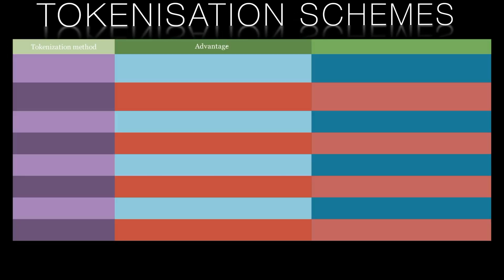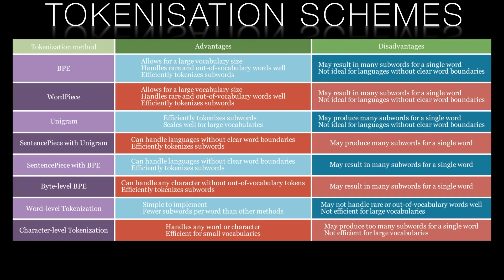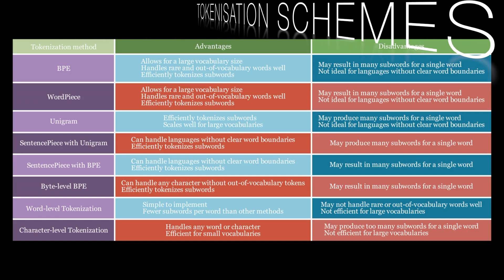With both word and subword tokenizers, there are multiple different approaches. Several of the popular methods are shown on your screen, each with its own strengths and weaknesses. One popular method is unigram tokenization, which involves breaking text down into individual characters or letters rather than words. This is the method used by the Bloomberg team in development of Bloomberg GPT.